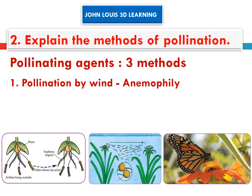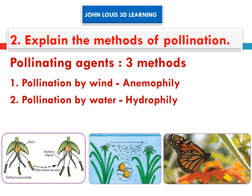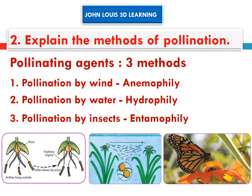Anemophily is the term for pollination by wind. Pollination by water is called hydrophily — a beautifully coined word. Pollination by insects is called entomophily. Entomology means the study of insects, so entomophily means pollination by insects.